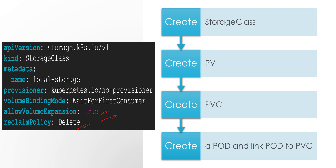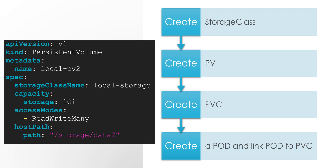Once the storage class is defined, the next thing is to define the persistent volume. While creating the persistent volume, we need to have the storage class name — this is the field we need to be aware of. This is a sample file for persistent volume. The version will be v1, kind will be PersistentVolume. This is the name for this particular PV. Here we need to give the storage class name — this is what we previously defined. I am requesting 1 GB of storage, access mode is ReadWriteMany, and this is the hostPath where the data will be stored. As I am using local storage, this path will be created in any of the nodes where the pod will be created.